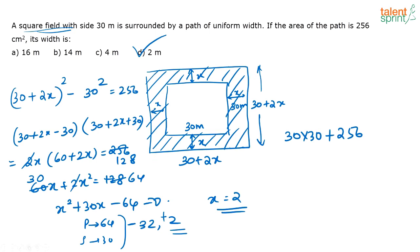This is equal to the area of the outer square. So if you solve this 30 into 30 plus 256, you get it as 1156. Now if this is a square, remember this is a square, so what will be one side?